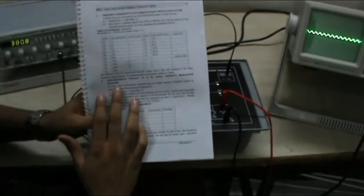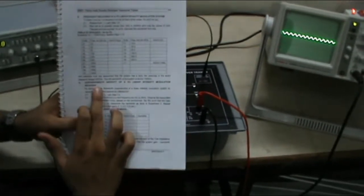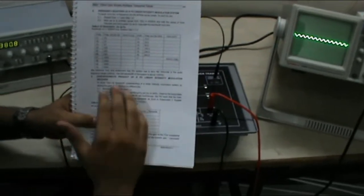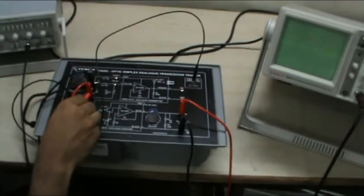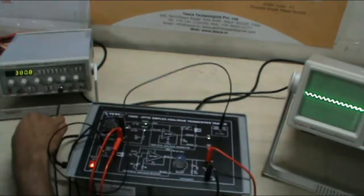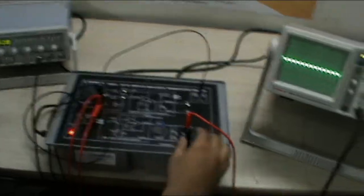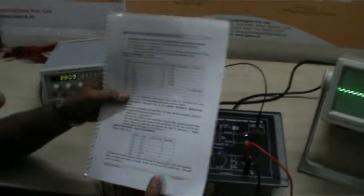Now we move on to the third experiment which is gain bandwidth product of a FO linear intensity modulation receiver. In this also we have to repeat the steps of experiment 1 till 1.4 in our manual. That is connect this fiber optic from this point to this point. Connect the input to channel 1 of CRO by giving it from this function generator. Connect it to VIN of transmitter. And connect the output of the receiver to channel 2 of CRO. These steps are common in all the three experiments.